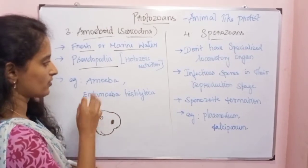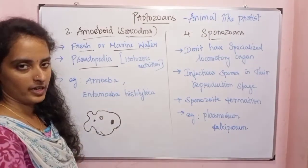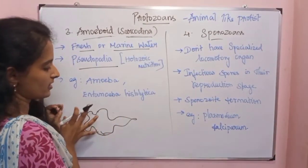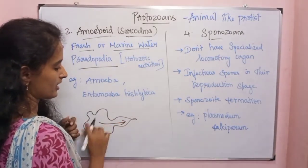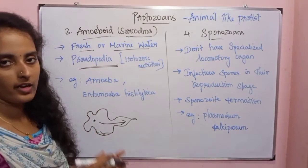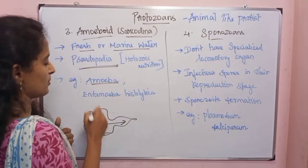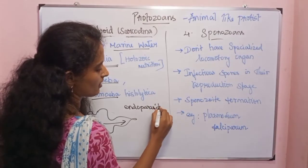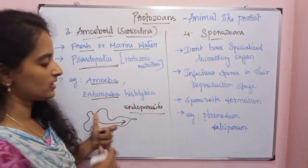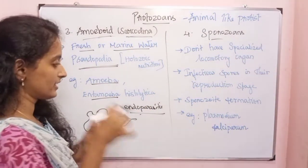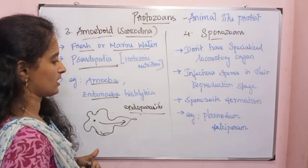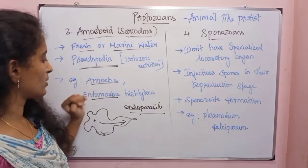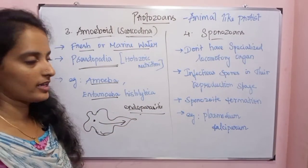The feeding method in amoeboids involves engulfing food particles — this is holozoic nutrition. An example is Amoeba. Another example is Entamoeba histolytica, which is an endoparasite living in the human intestine. So amoeboid characters include living in fresh or marine water, locomotion by pseudopodia (false feet), and some being endoparasitic such as Entamoeba in the human intestine.